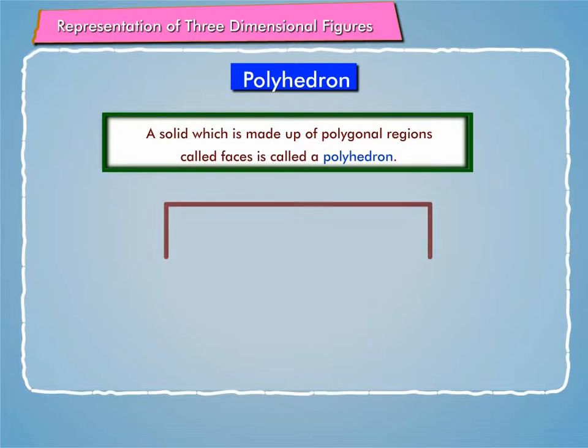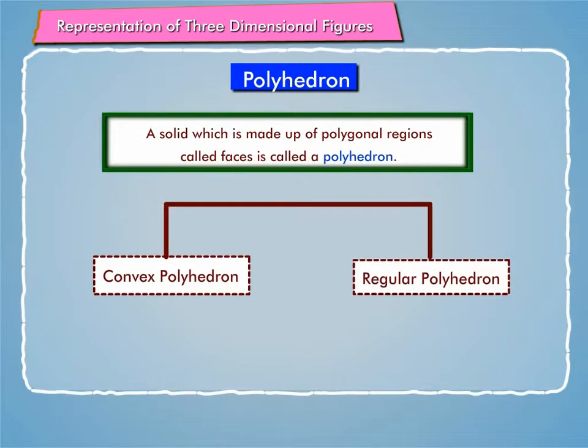There are two types of polyhedrons: convex polyhedron and regular polyhedron.